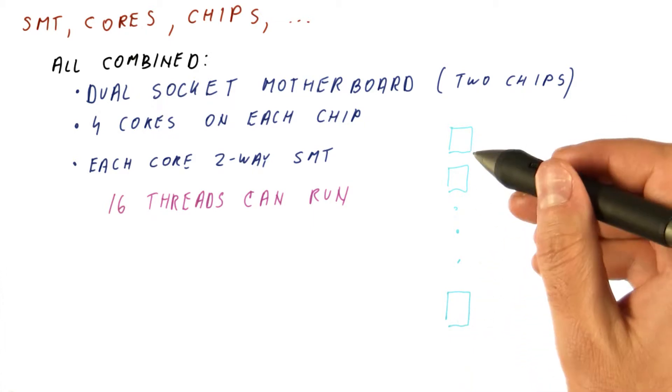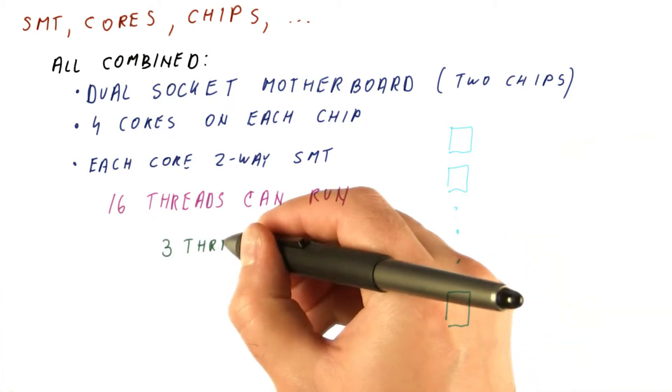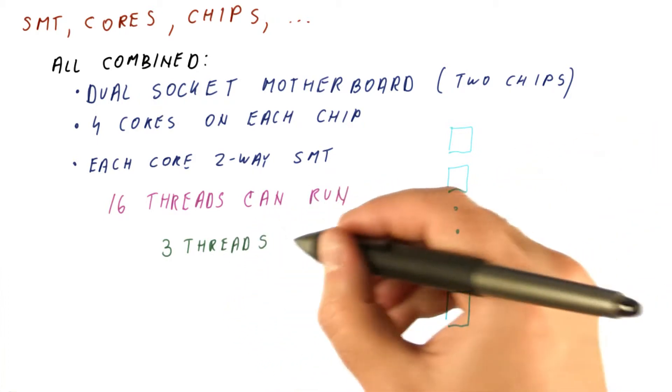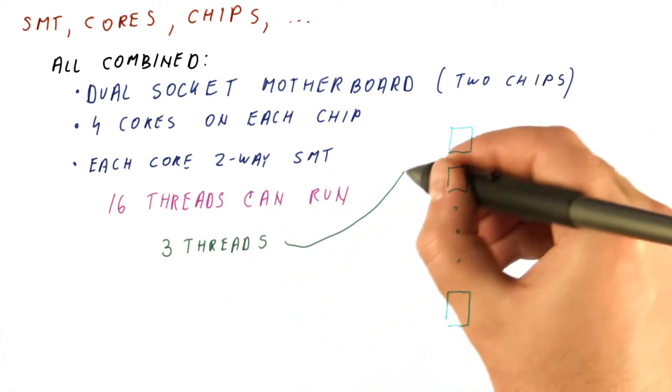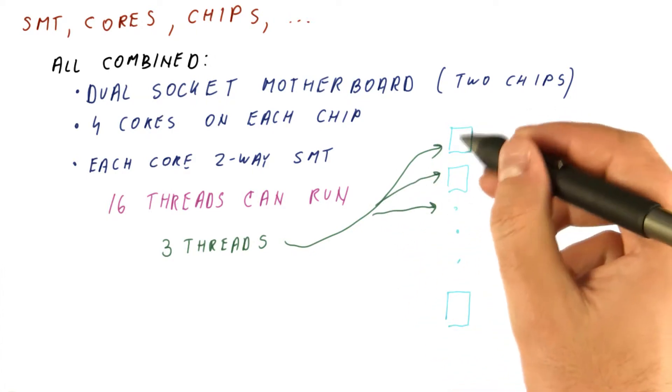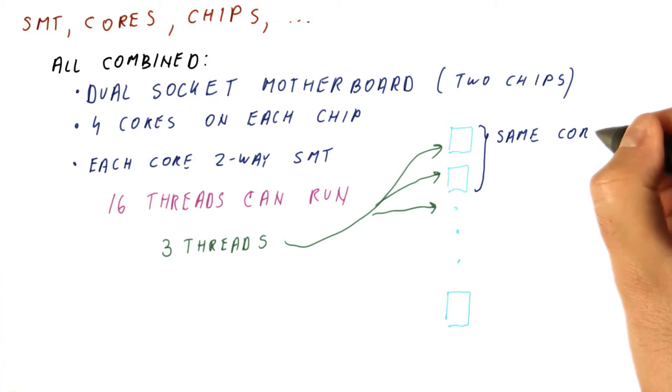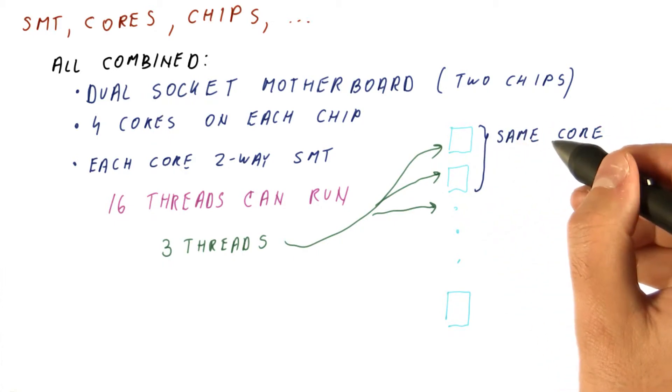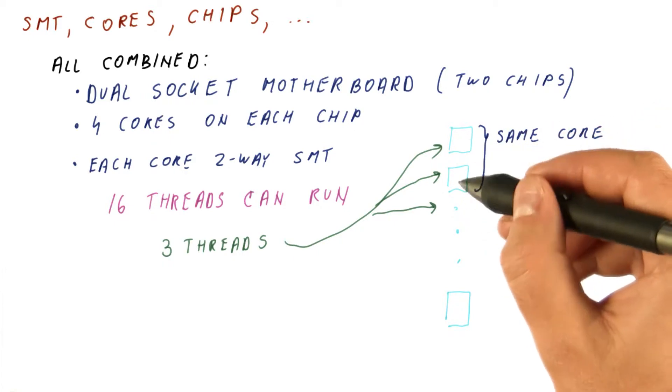This can be a big problem, because let's say that we actually have three threads and the operating system, not knowing any better, just maps them to the first three threads that it has. But it turns out that these two are really threads on the same core that compete with each other for issue slots and other things in an out-of-order processor.